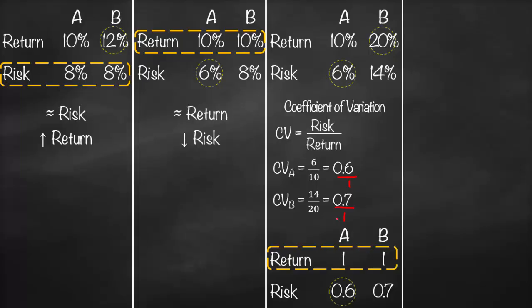By using the coefficient of variation, we convert our return and risk into relative risk and relative return. With the coefficient of variation, the lower the value the better, because it means we have lower risk relative to return.